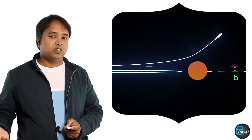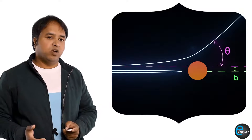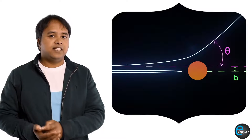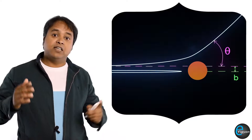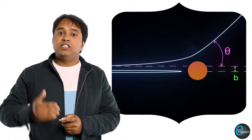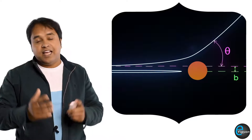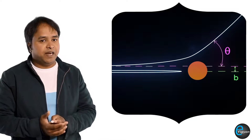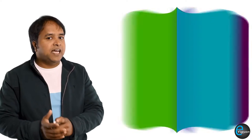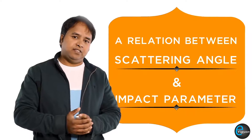If the line of incidence of the alpha particle is at a distance from the center of the nucleus, then the scattering angle will be smaller. To find the scattering angle at a particular value of the impact parameter, we need a relation between the scattering angle and the impact parameter. So let's derive that relation.